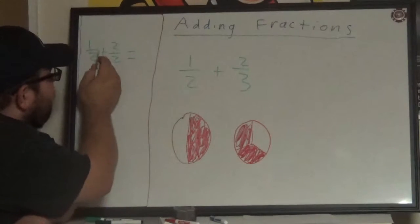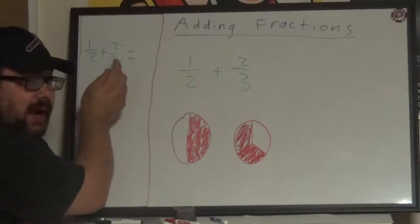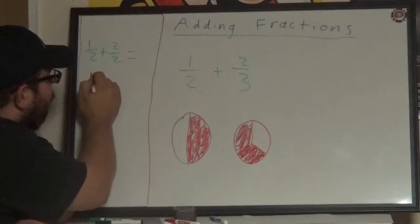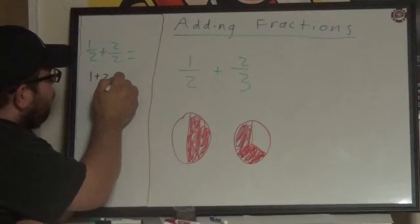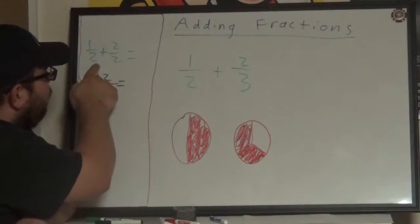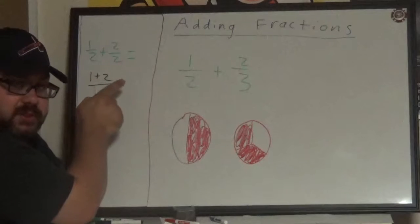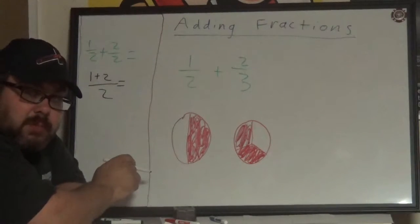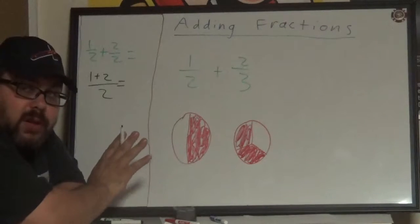In this example, we add straight across. One plus two over, not two plus two, but just two. Once we have a common denominator, we do not change it.